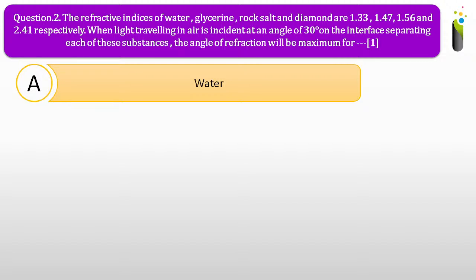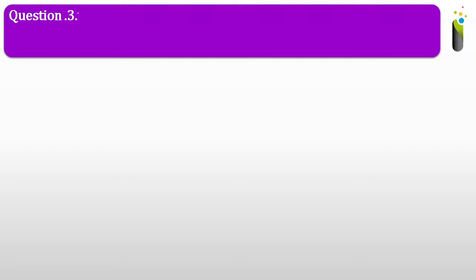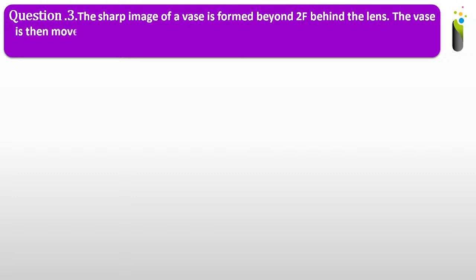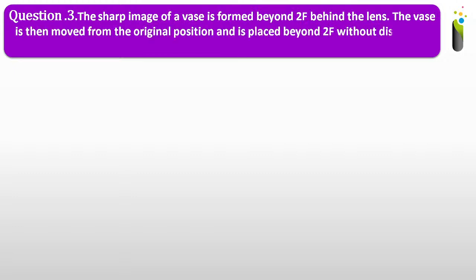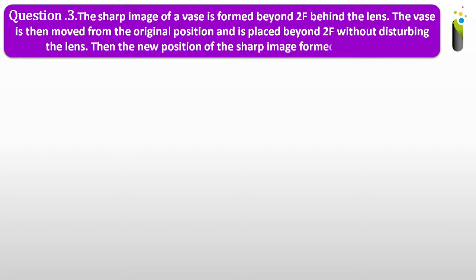So the angle of refraction will be maximum for water. Going ahead with question number three. The sharp image of a vase is formed beyond 2F behind the lens. The vase is then moved from the original position and is placed beyond 2F without disturbing the lens. Then the new position of the sharp image formed will be dash.